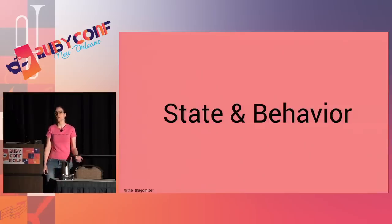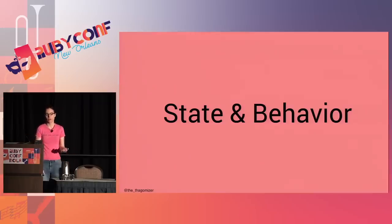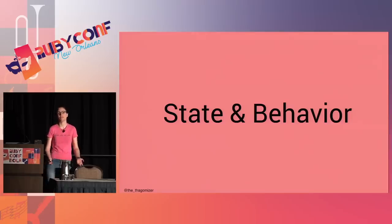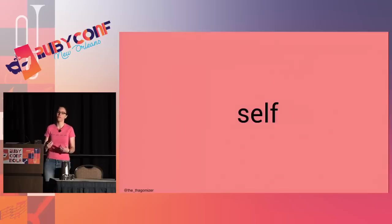State includes things like fields, attributes, and instance variables — what you call them varies depending on the language and your background. Behavior is what you do with that state, things like methods. In most OO languages, the object is responsible for modifying its own internal state. In Ruby, we call this 'self'.